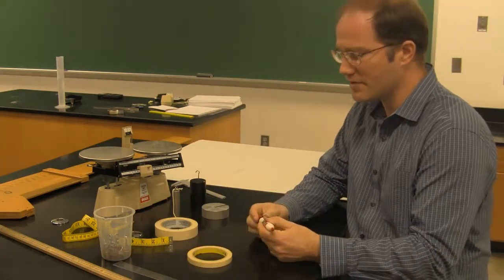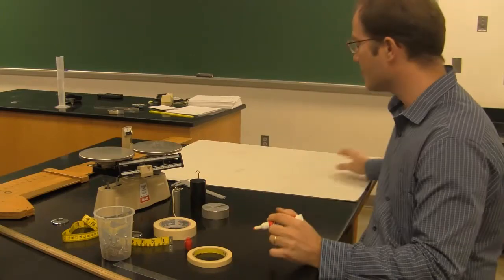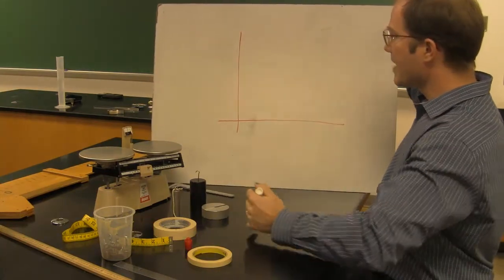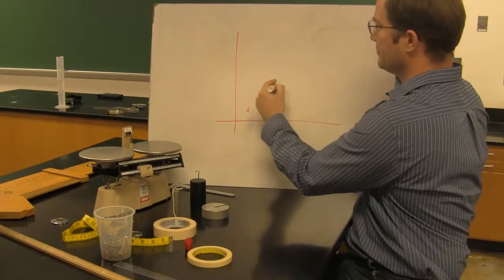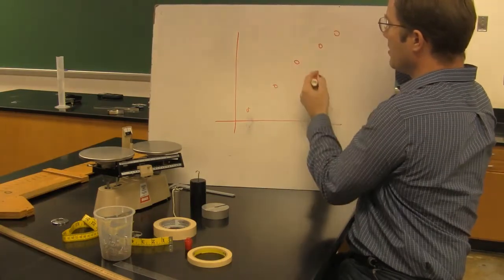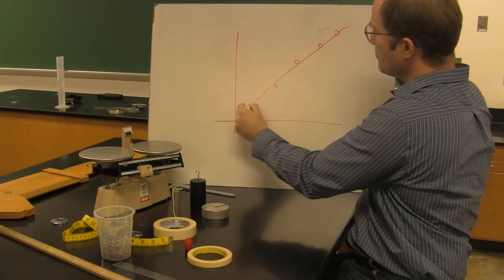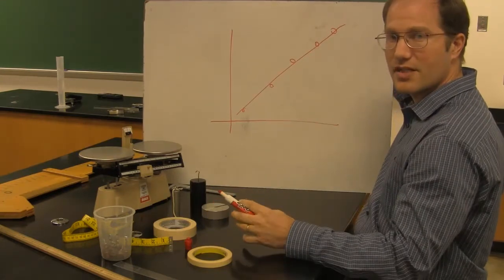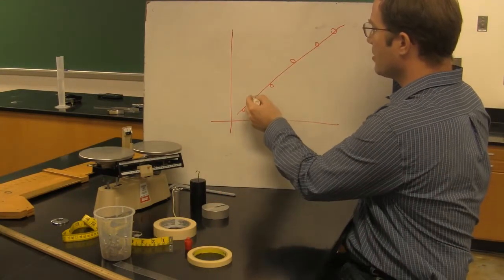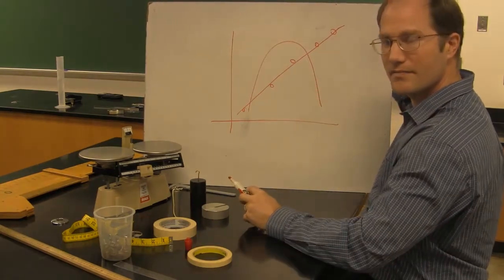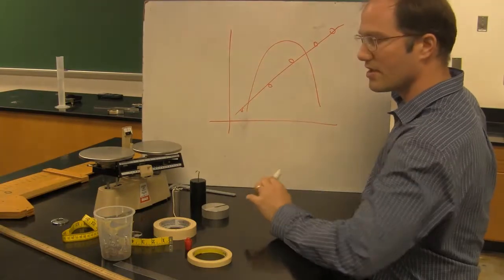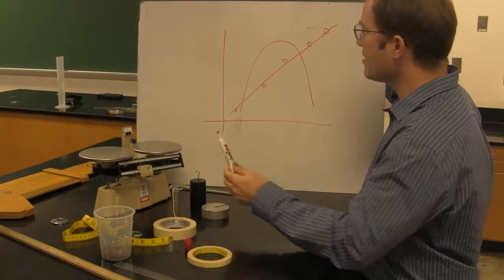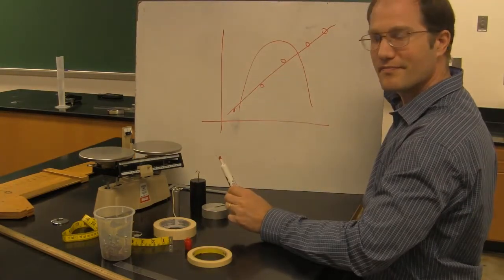Whenever you graph two variables against each other to determine their relationship, it's usually on an x-y coordinate plane. If the points come in fairly linear so that you can fit a regression line through them, and it looks like it fits the data pretty well, you would say, I think I have a linear relationship. Or maybe you get something that has a curvature to it, maybe something that looks quadratic.